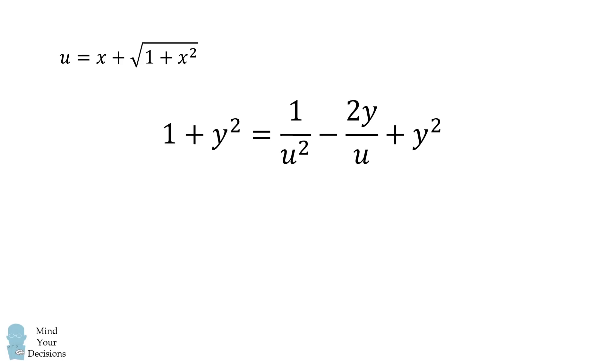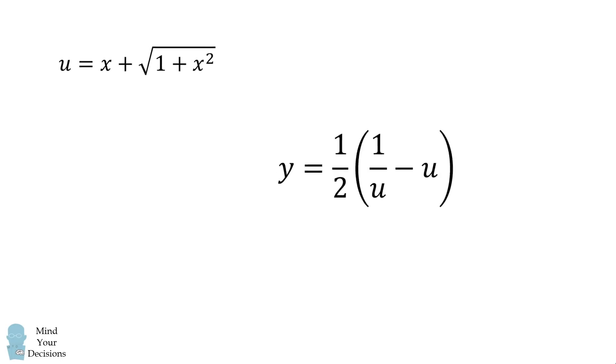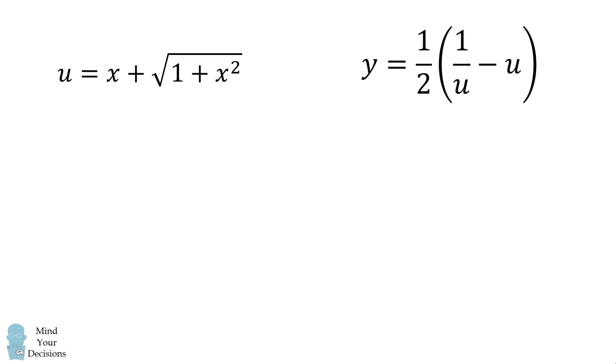We can now cancel out the y squared terms on both sides. We now have a linear equation in terms of y. Let's go ahead and solve for y. We'll multiply both sides by u and then we'll distribute the u. We can then divide both sides by 2. And we have an equation for y in terms of u.